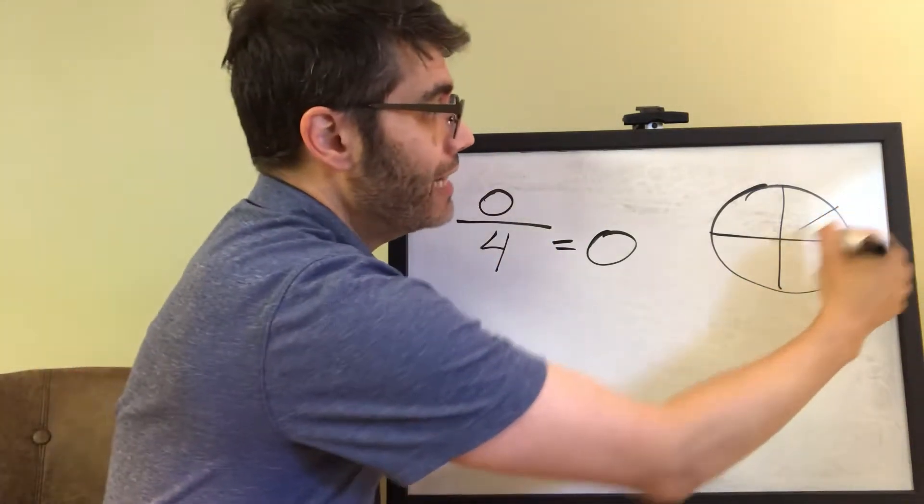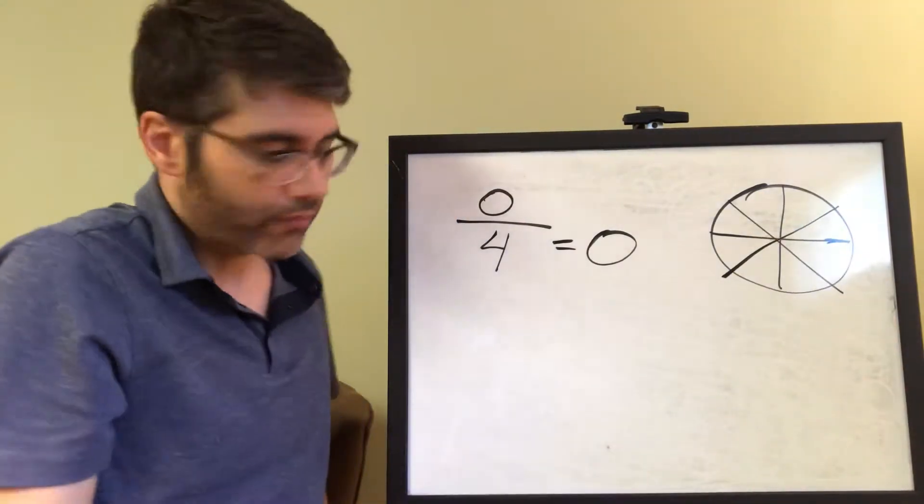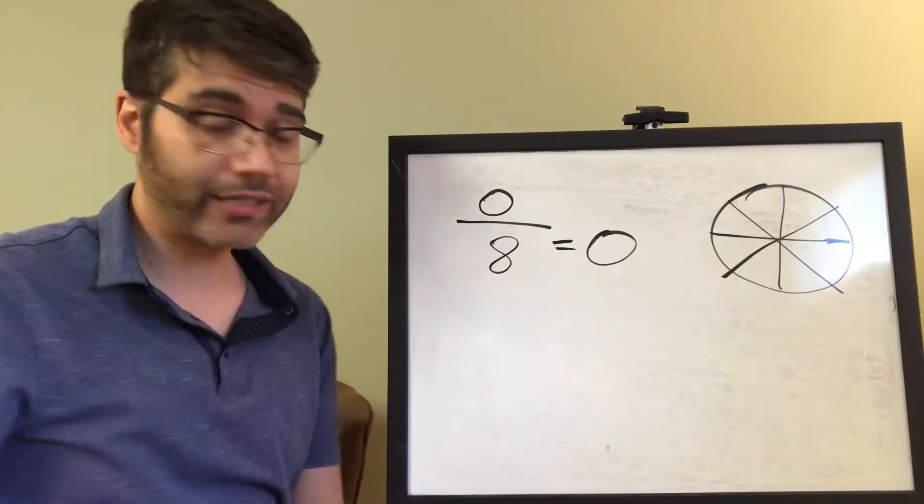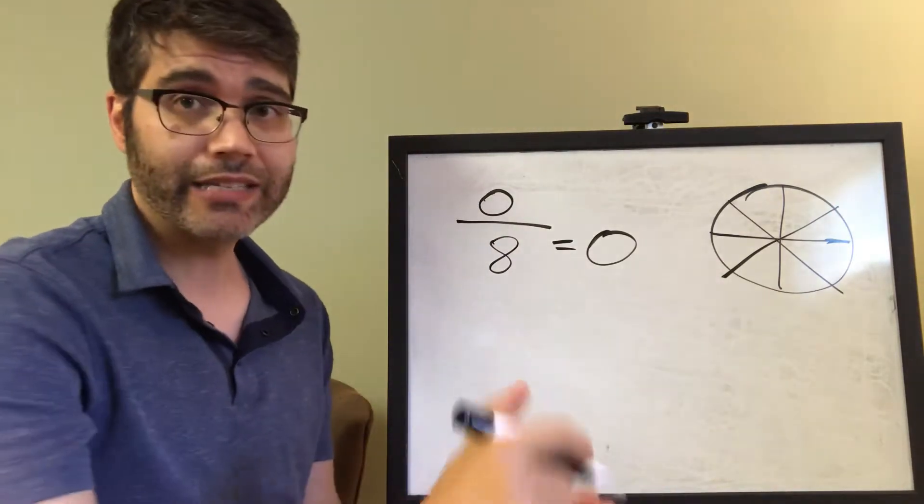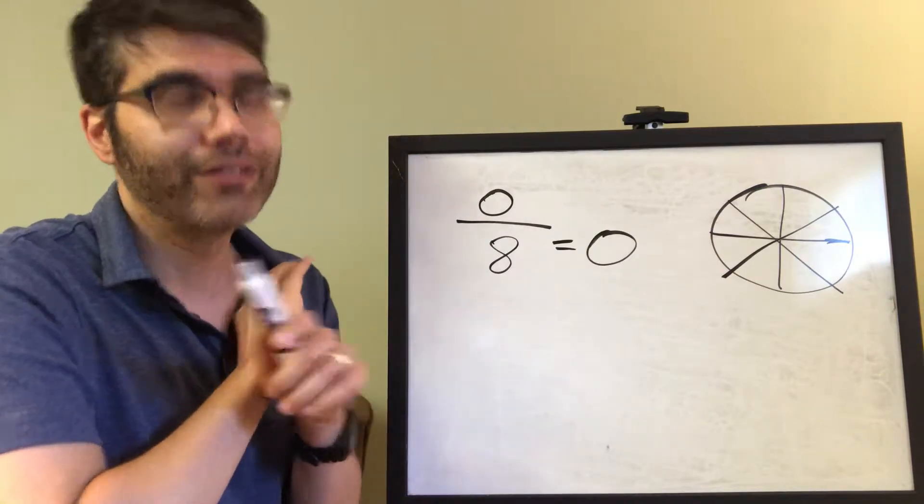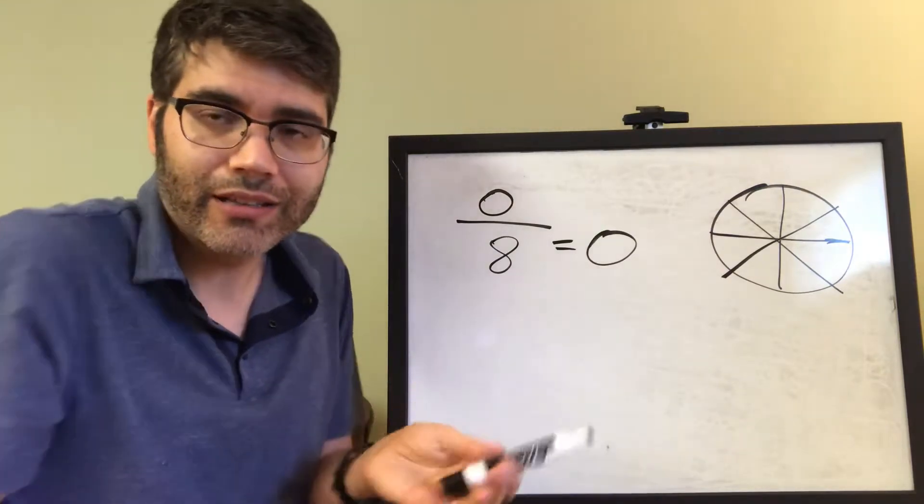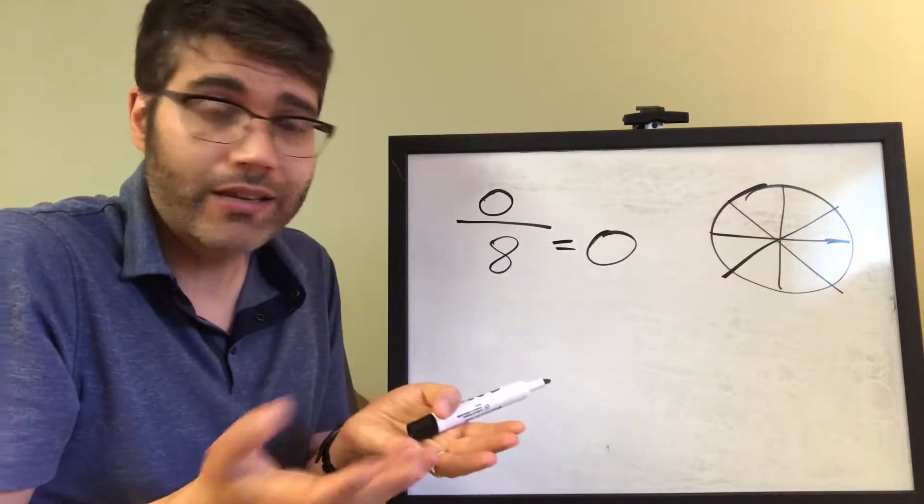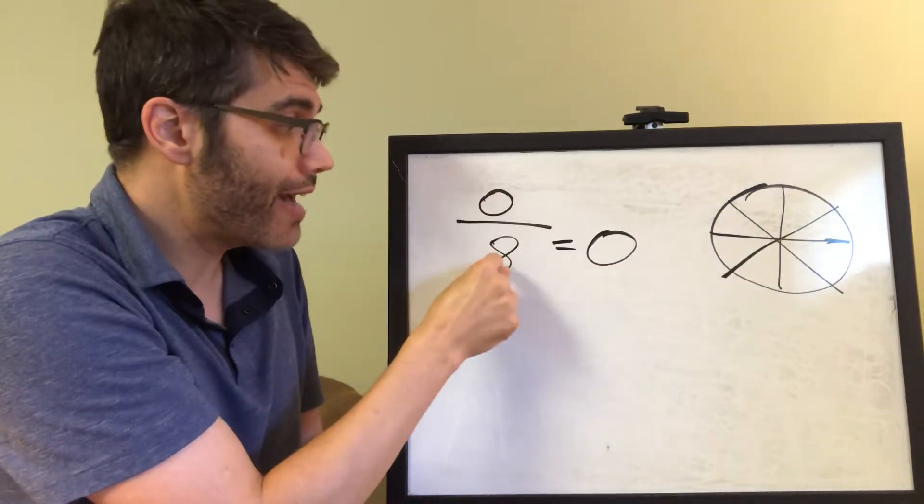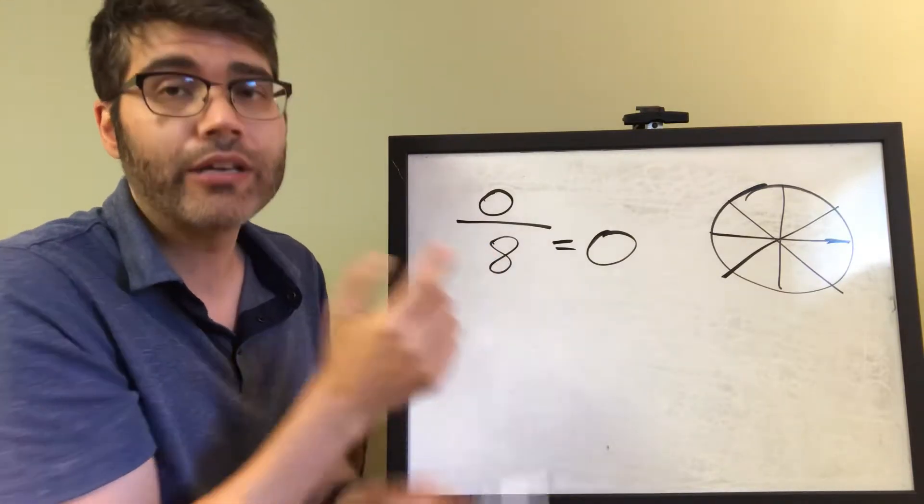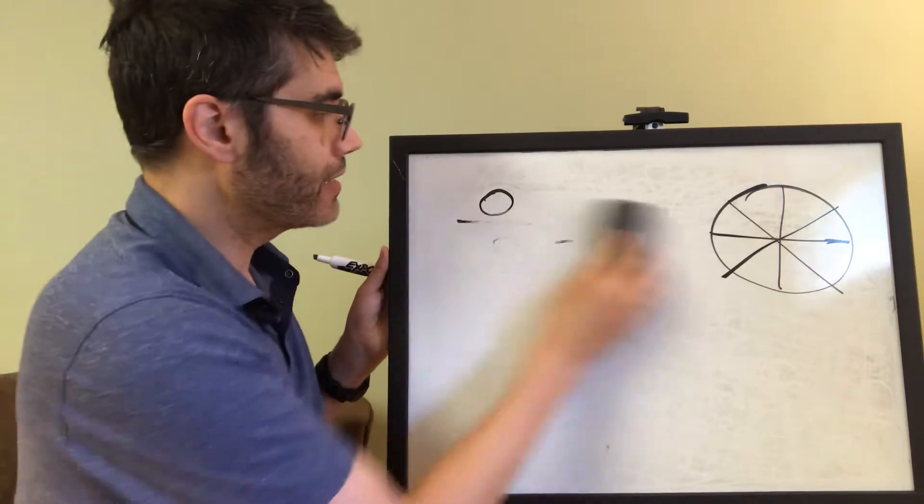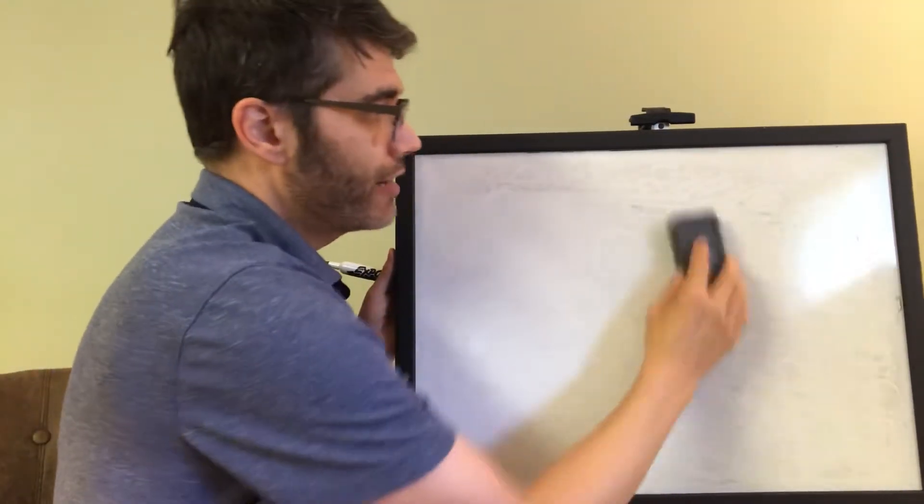Likewise, if I had 8 slices, it's the same pizza, except I just divide it into 8 slices. But I choose no slices. Let's say I don't want any slices. So how many slices are in my hand now? Still 0. So that's why 0 out of any non-zero number is always going to be 0. All right. So that's that second weird kind of fraction.